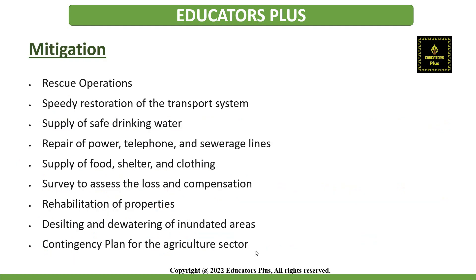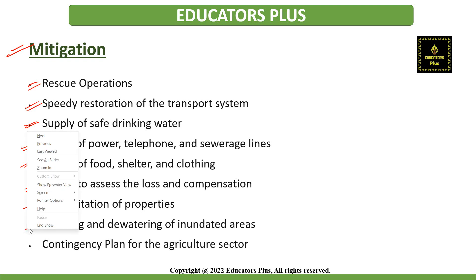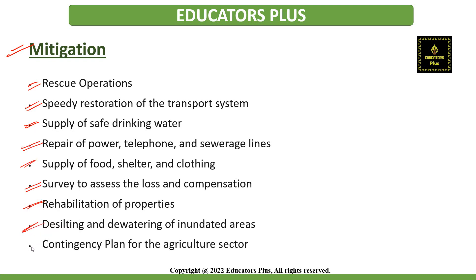Regarding post-flood mitigation — things done after a flood — this includes rescue operations, speedy restoration of the transport system, supply of safe drinking water, repair of power, telephone, and sewage lines. Food should be supplied, shelter provided, and clothing distributed to affected people. Surveys should be conducted to assess losses and determine compensation. Rehabilitation of properties, desilting, and dewatering of inundated areas should be carried out, along with a proper contingency plan for the agricultural sector, which faces huge losses during floods.